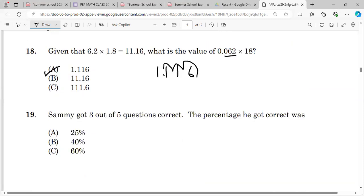Sandy got 3 out of 5 questions correct. The percentage got correct was what percent? Percent means out of 100, so we times it by 100%. My students always ask me to put it over 1, so let me do that. 5 into 100 goes 20 times, 3 times 20 is 60%.